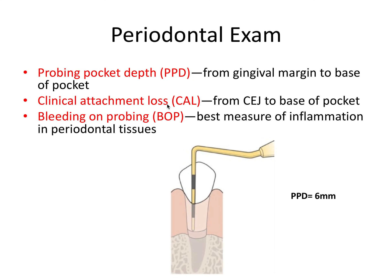Next, we have clinical attachment loss, or CAL, which is measured from the CEJ — the cemento-enamel junction — which is a fixed point on the tooth, to the base of the pocket. In this image, the CEJ is at the same level as the gingival margin, so measuring from CEJ to the base of the pocket we again get six millimeters — so our CAL is six millimeters. Bleeding on probing, or BOP, is actually the best measure of inflammation in periodontal tissues. When you probe a site and it bleeds, you record a positive BOP at that site.